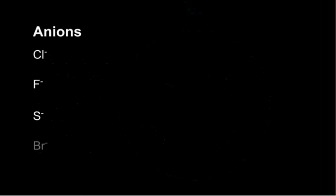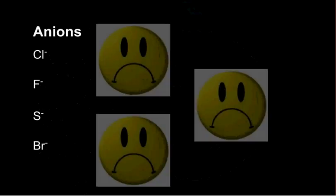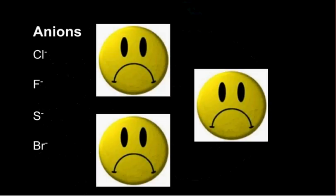What about anions? Some common anions include chloride, fluoride, sulfide, and bromide. As you can see from the three frowny faces here, anions are always very negative — they're negatively charged.